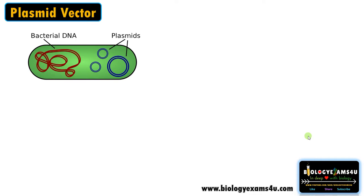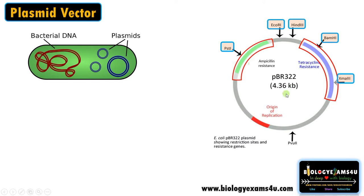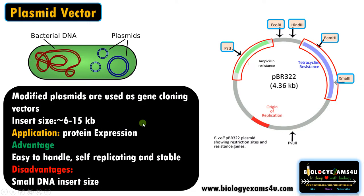So the minimum requirements of a vector are an ORI, selectable markers, and unique restriction sites within selectable markers. Let's move to the first vector — the most common one — plasmid. Plasmids are extra-chromosomal double-stranded circular DNA molecules present in bacteria. Genetically engineered plasmids are widely used as gene cloning vectors. pBR322 has an ORI, two selectable markers (ampicillin resistance and tetracycline resistance regions), and many unique restriction sites including restriction sites within the selectable markers.